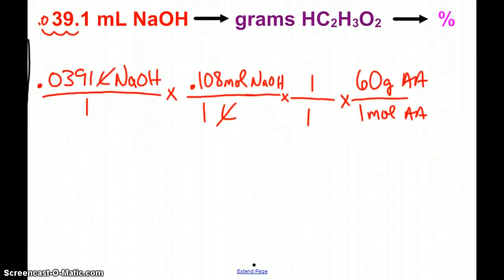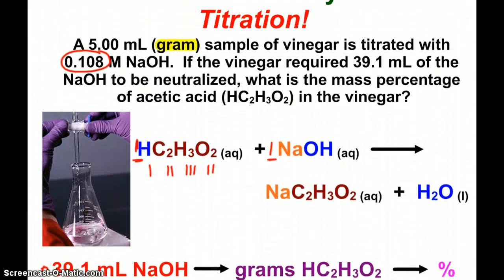And so when I do the math here, I see that it comes out to be about 0.253 grams of my acetic acid in that vinegar sample. Well, what was my starting sample size? 5 milliliters, 5 grams.